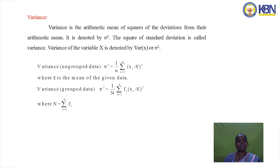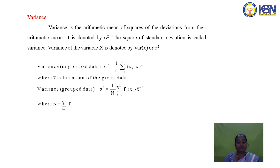Variance is the arithmetic mean of squares of deviations from the arithmetic mean, denoted by σ². For individual series, σ² = (1/n) Σ(xi − x̄)². For grouped data — discrete or continuous series — σ² = (1/N) Σfi(xi − x̄)², where x̄ is the mean and N is the total frequency.